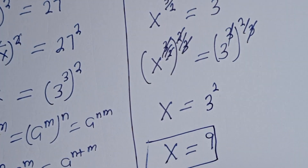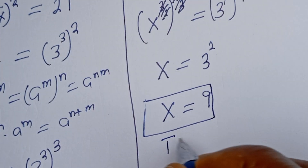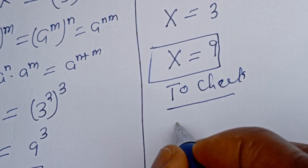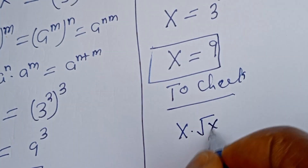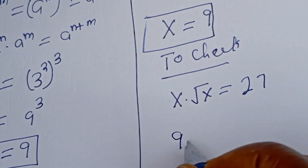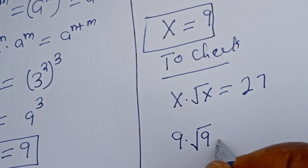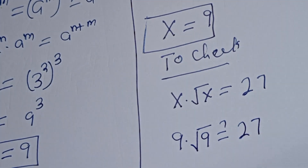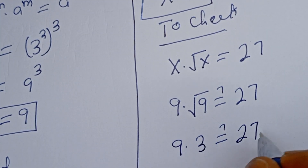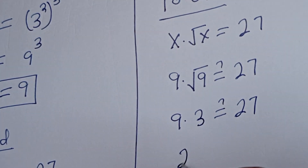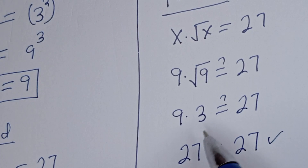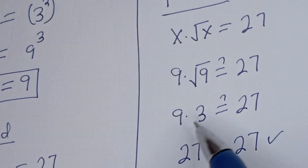Let's check to confirm this answer is correct. We have the given equation: S multiplied by root of S is equal to 27. When S is 9, we have 9 multiplied by square root of 9, which must equal 27. Square root of 9 is 3, so 9 multiplied by 3 equals 27, which is true. I hope you enjoyed the video. Please don't forget to like, share, comment and subscribe to my channel. Thank you, bye bye.